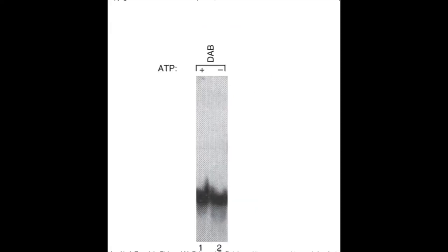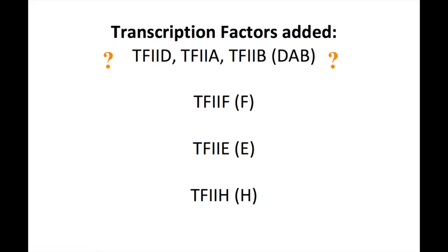Starting with lanes 1 and 2, we can see that DAB — which is TF2D, TF2A, and TF2B — were added with or without ATP. It isn't surprising that these products move at the same speed regardless of ATP, though. Without polymerase being added, there is nothing to be phosphorylated, and therefore we cannot conclude anything yet about whether these factors act as a kinase for RPB1.